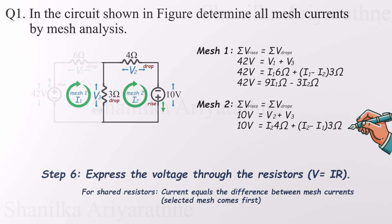V3 becomes I2 minus I1 times the resistance. That switch is essential, because it reflects the perspective of the mesh we're analyzing. Now we can simplify the equations using the expressions we just plugged in.